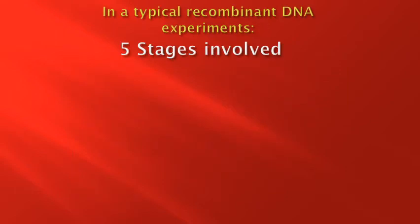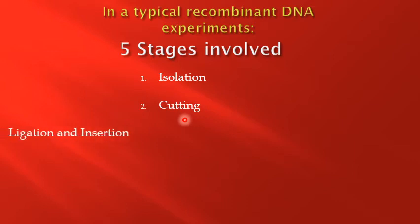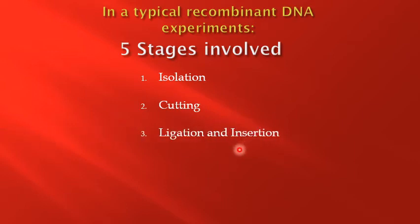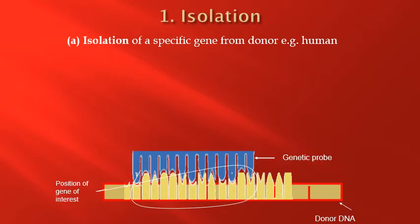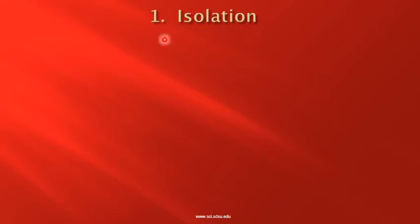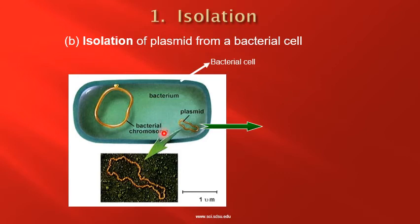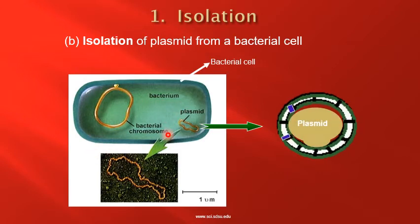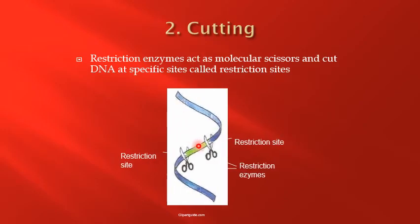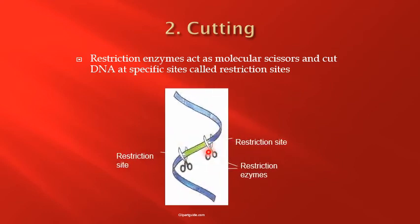In a typical recombinant DNA experiment there are five stages involved: isolation, cutting, ligation and insertion, transformation, and expression. At the first step, a specific gene is isolated from the donor DNA — for example, human DNA. In the isolation step, the bacterial cells are broken up and the plasmids are separated from the larger chromosomal segments.